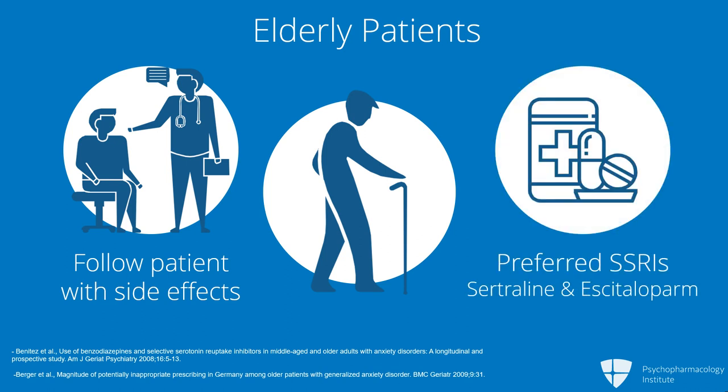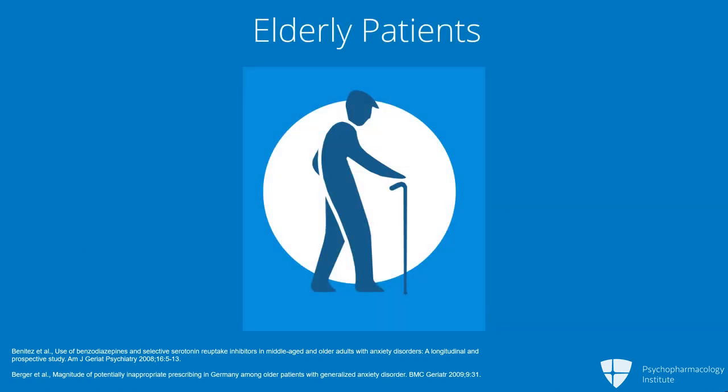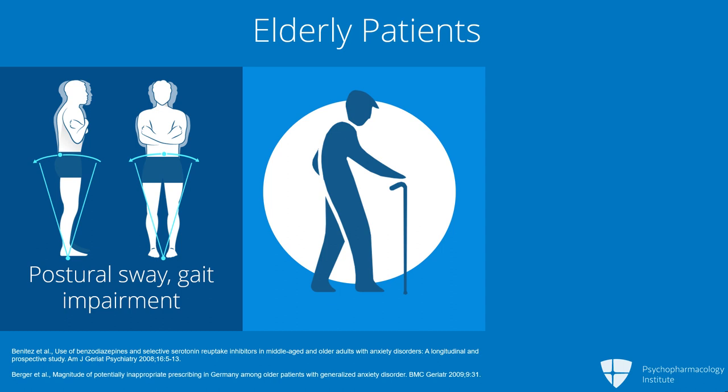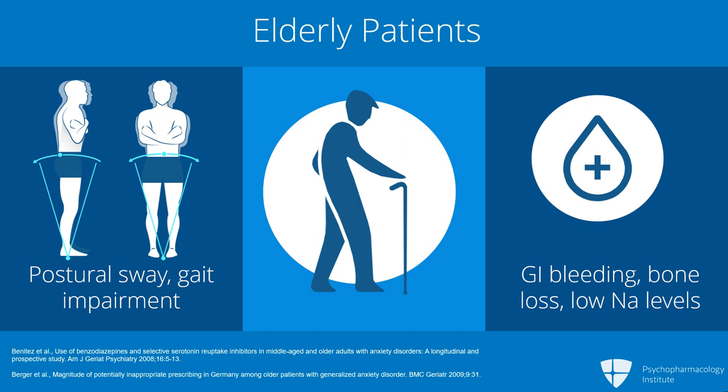SSRIs we would prefer in the elderly would be sertraline and escitalopram — they have a slightly better safety profile. There is a problem in the elderly with gait impairment and postural sway with SSRIs, greater than in younger people. Gastrointestinal bleeding is a concern in all age groups but worse in the elderly, as is bone loss and low sodium levels.